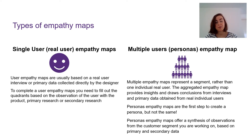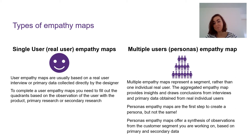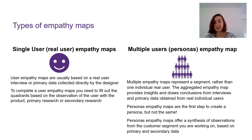There are two different types of empathy maps. The first is what we call a single user empathy map. That is when you sit down with your user and interview them, and throughout the interview you get data that you use to fill out your empathy map. That user is real — best case scenario you get to interview them, second best you get primary data from those users, for example if the user fills a log book.